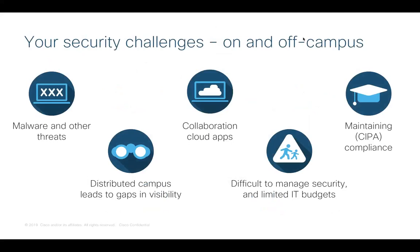First, there's malware and other threats. Threats continue to increase in sophistication and frequency, and despite the existing security products you have deployed today — everything from firewalls to web proxies to email security on your endpoints — you still face too many malware infections and phishing attacks. A distributed campus also leads to more gaps in visibility and coverage. Since you have more locations and devices to protect, there's less visibility into who's accessing what, which makes it harder to protect.